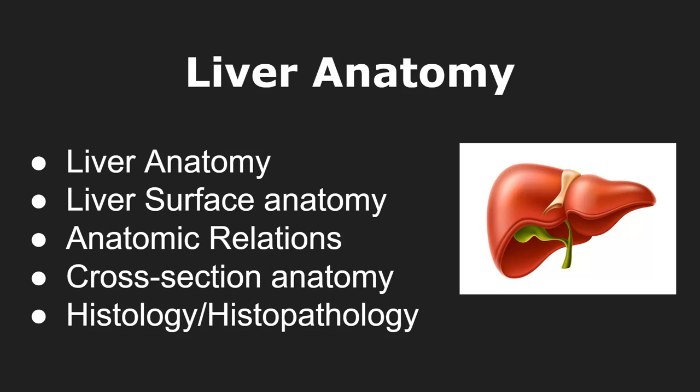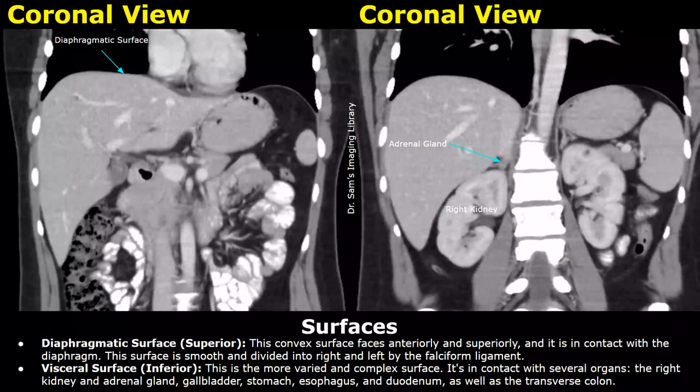Hello everyone, this is Dr. Sam and welcome to a video series based on the liver. This is the first part of the series, which is about liver anatomy. The next parts will be about liver surface anatomy, anatomic relations, cross-section anatomy, and finally histology and histopathology. We will use CT images to see the liver and its structures.